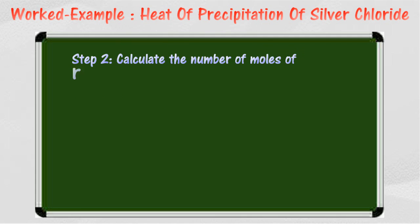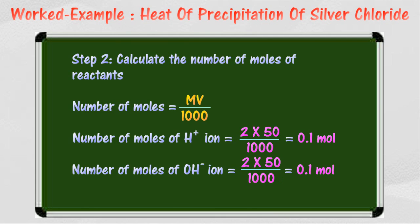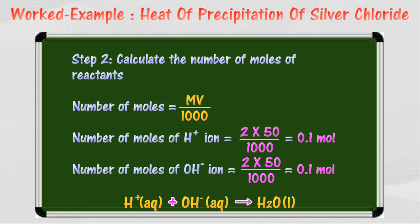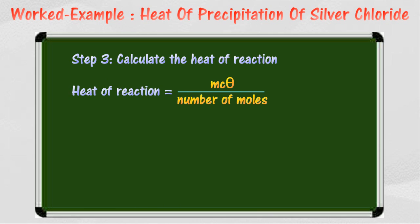The second step is to calculate the number of moles of each reactant — hydrogen ion and hydroxide ion. Next, write down the ionic equation. Lastly, link the number of moles of the reactants with the heat change. In this case, 0.1 mole of hydrogen ion reacts with 0.1 mole of hydroxide ion.